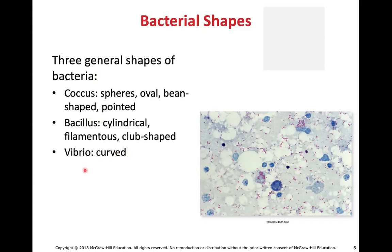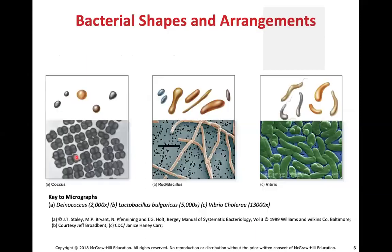You want to familiarize yourself with these names because some labs will ask you what shape the bacteria is. I don't want you to say circle, oval, or sphere — use the correct terms: cocci, bacilli, or vibrio. Here are examples of cocci, bacilli, and vibrios so you can get perspective on the actual shapes.